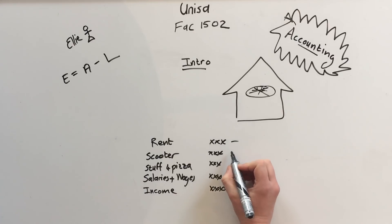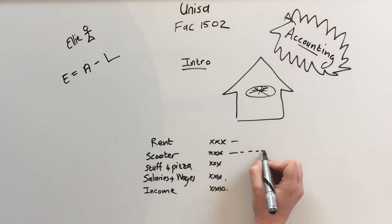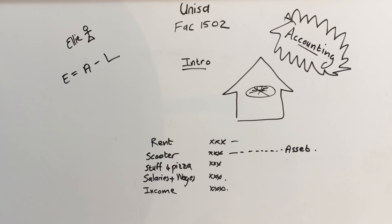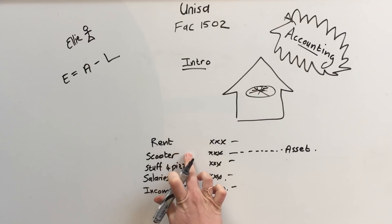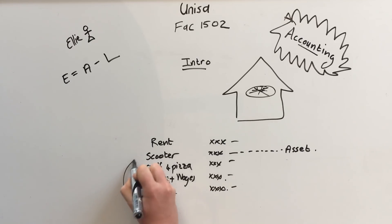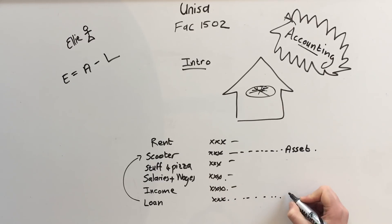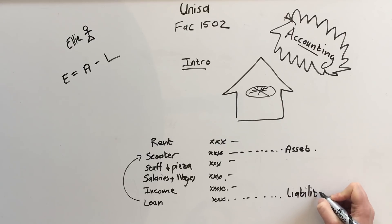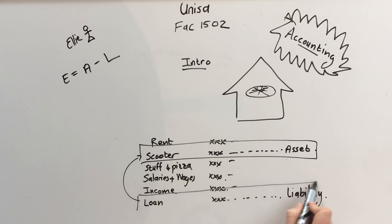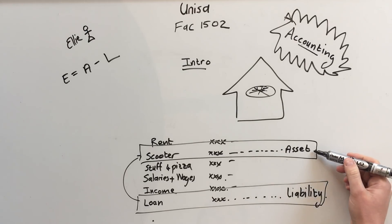Let's look at the pizza shop items and where they fall. Rent is something we have to pay monthly. A scooter is something we are going to keep for quite a while — so this one is an asset; it's an asset for our business. The stuff for the pizza, salaries and wages, and income we are going to spend often. To buy the scooter, because we won't have enough money upfront, we are going to borrow — so we'll have a loan at the bank, and that is a liability. So far we have figured out the asset part and the liability part.